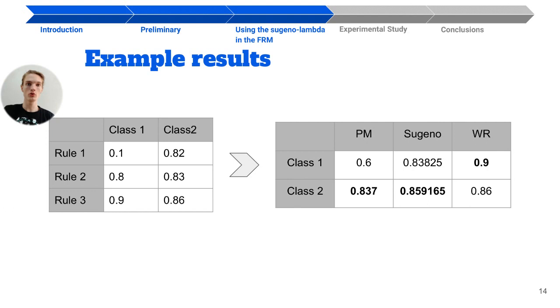With both, you are seeing the predicted class for that heuristic. Analyzing the table on the right, for both fuzzy measures studied, the Sugeno and the power measure, the class 2 would be the predicted class. However,